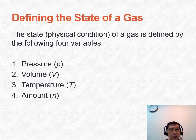To define the kinetic theory of gases, there are four independent variables that we should be aware of: pressure, volume, temperature, and amount of gas in terms of number of moles.